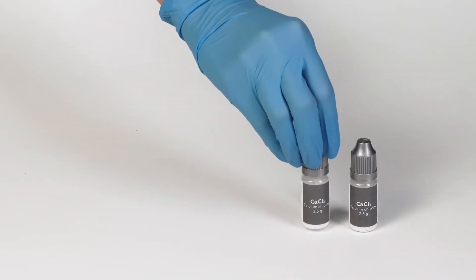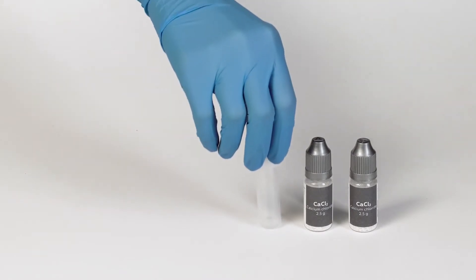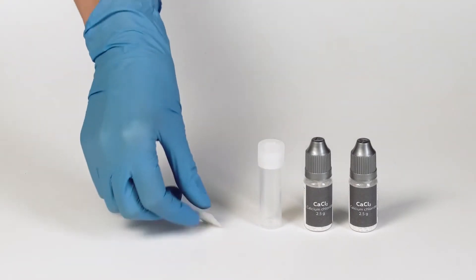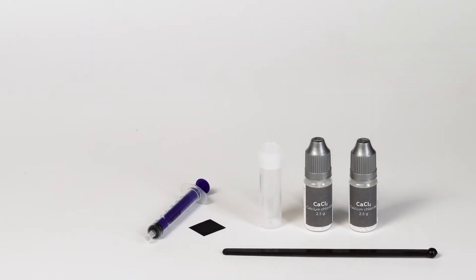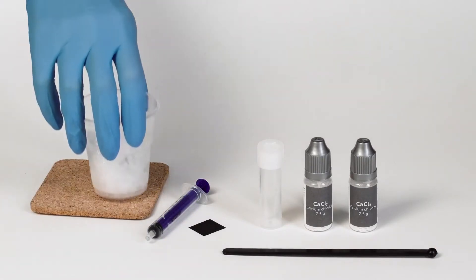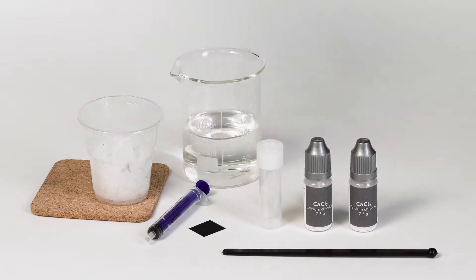For the Thermo Chameleon experiment, you will need two bottles of calcium chloride, one plastic vial, a thermosticker, a plastic stirring rod, a 5 milliliter syringe without a needle, a cork stand, crushed ice, water, and some coins.